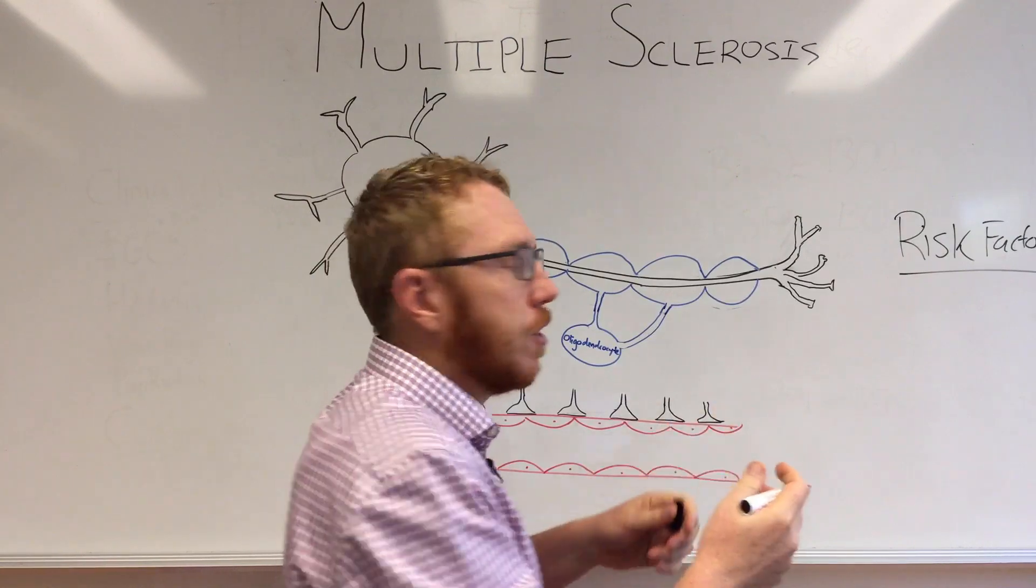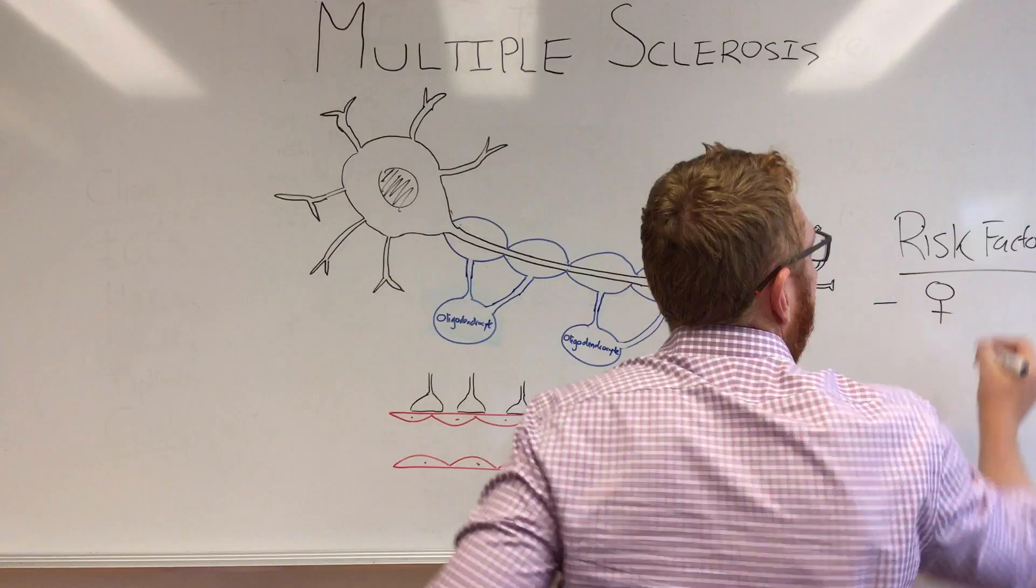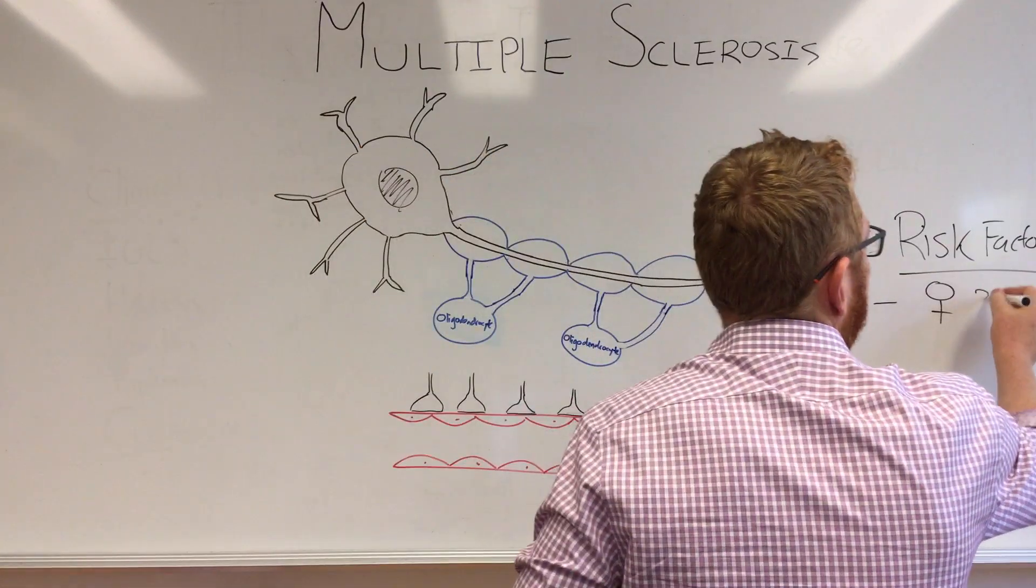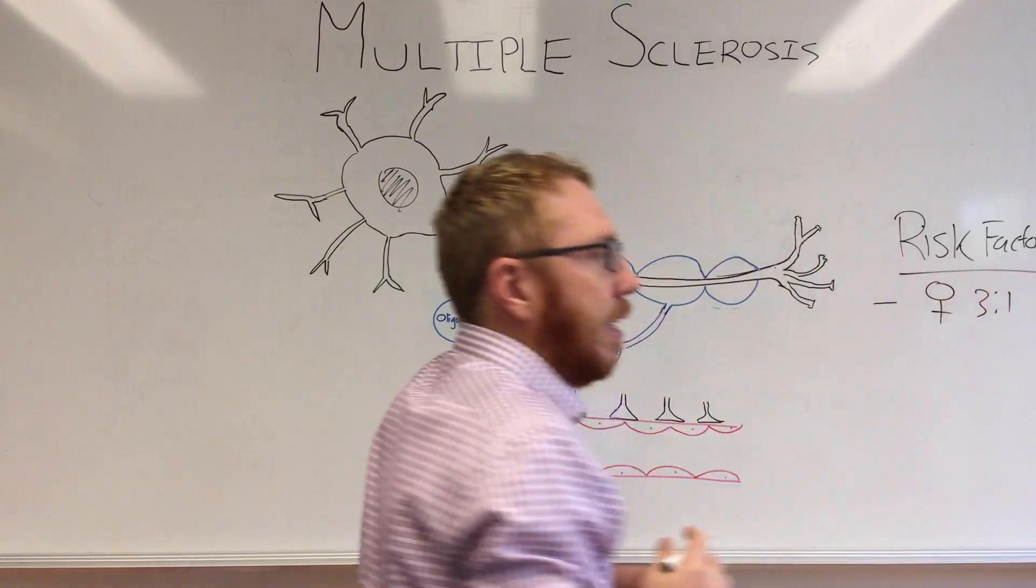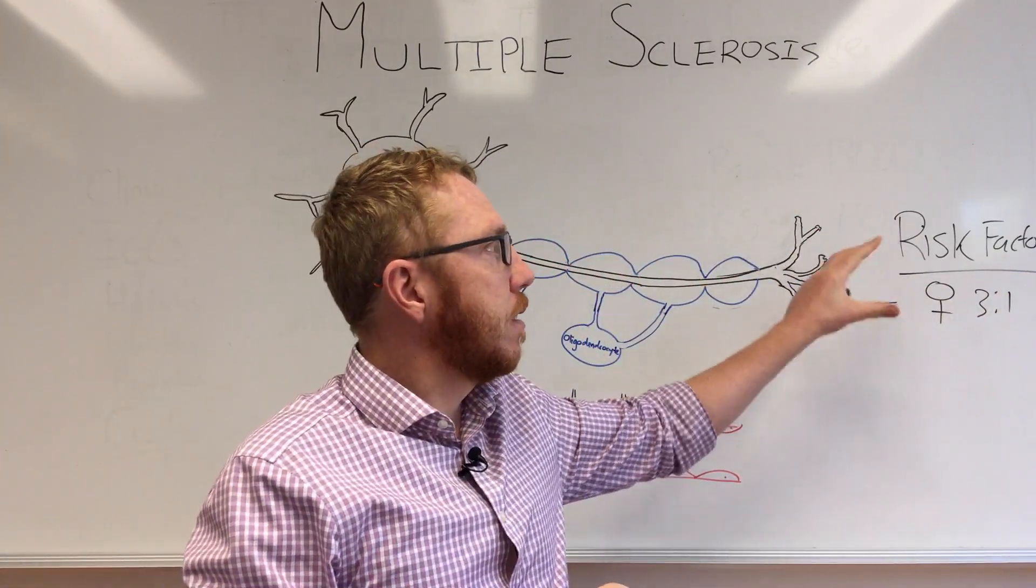In no real order, but these are the most common and the strongest risk factors that are shown in the literature. Firstly we have gender or sex, so it appears that females are about three to one to males and that rate appears to be increasing.